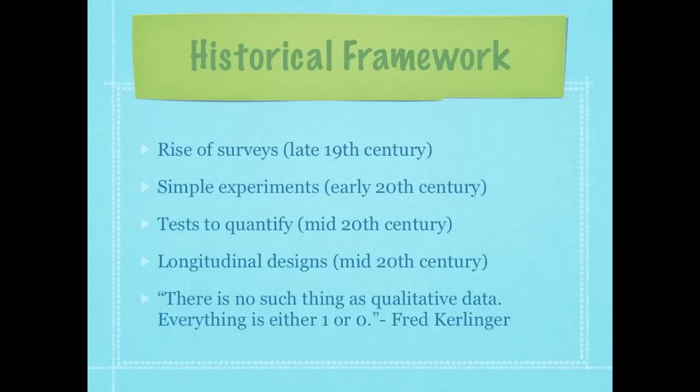I wonder how you put a number on something like intelligence. And most of you are aware that Gardner really challenged that with multiple intelligence theory. We see the rise of longitudinal designs in the mid-20th century. And I love this quote from Fred Kerlinger, which says there's no such thing as qualitative data — everything is either one or zero. All of the computer nerds out there just shouted for joy, while all of the qualitative researchers just booed poor old Fred.